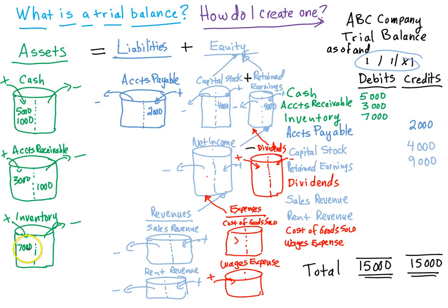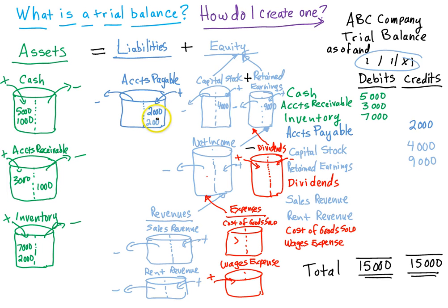Next, let's buy a couple thousand dollars of inventory from a supplier. We received more inventory, so that's a debit to inventory on the left-hand side. We haven't paid yet, so we're going to increase accounts payable by $2,000. In this case, assets increased by $2,000, liabilities increased by $2,000, and the balance sheet equation remains in balance.